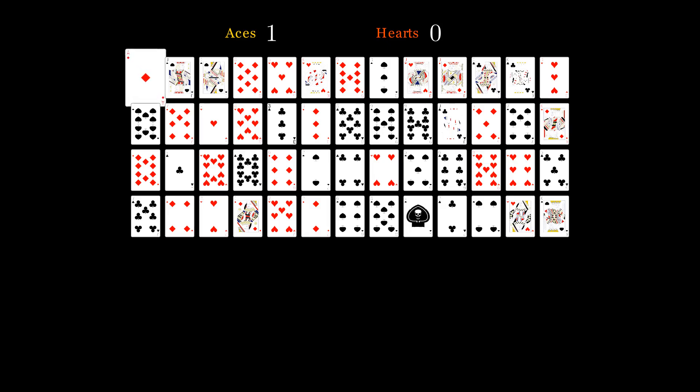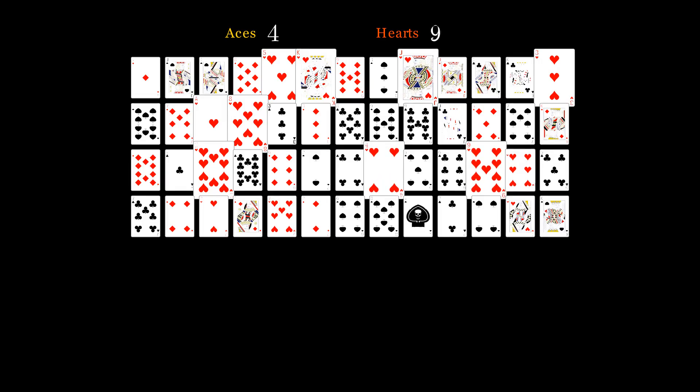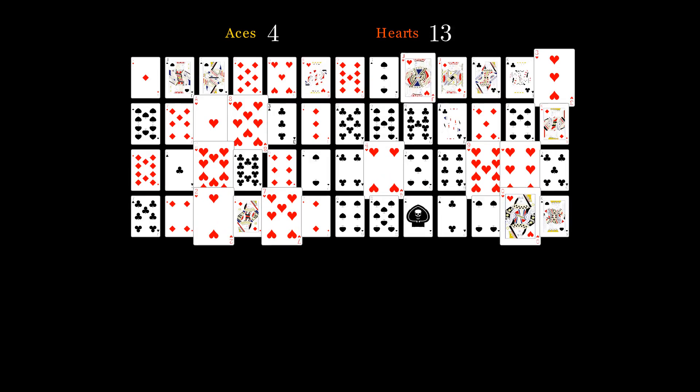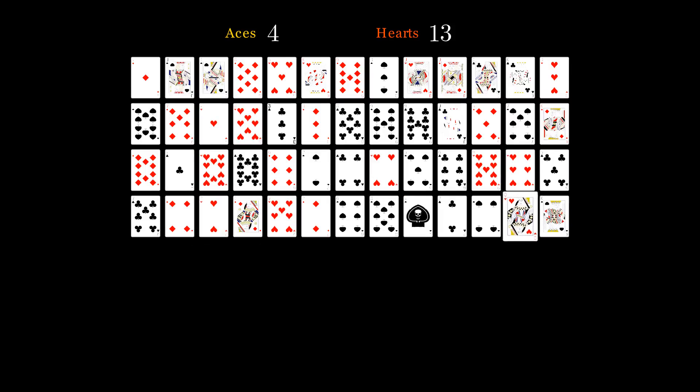There are a total of 4 ace cards in the deck. Similarly, there are a total of 13 heart cards in the deck. Therefore, the probability of drawing a heart card would be 13 divided by 52.